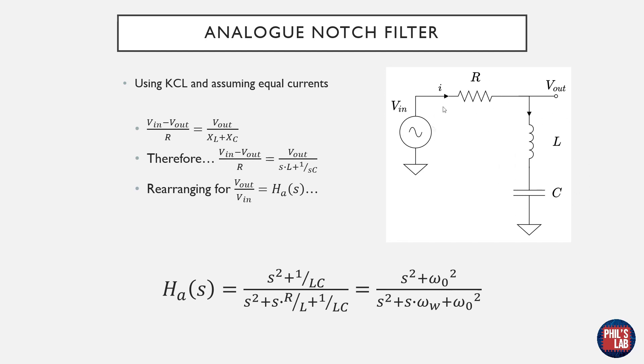We place the input here before the resistor and take the output at the other side of the resistor. Then again we can use equal currents going through the resistor and inductor capacitor, substitute for resistances and reactances and we get this following transfer function.